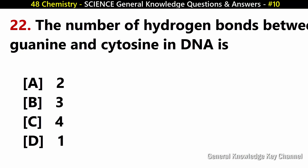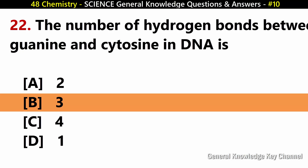The number of hydrogen bonds between guanine and cytosine in DNA is? Answer B: 3.